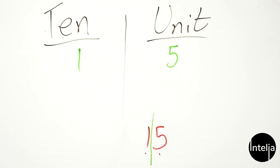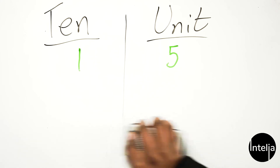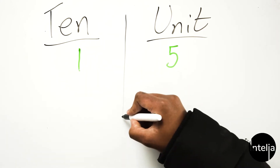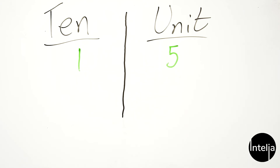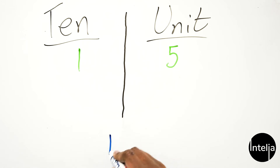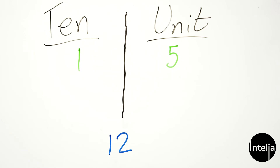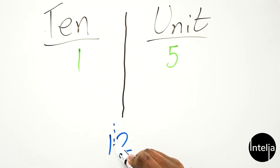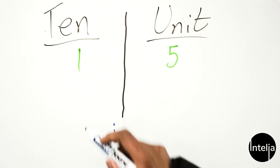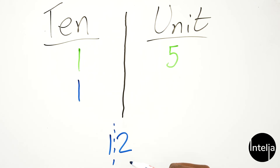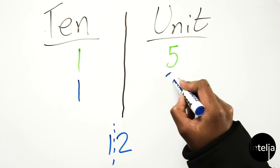Let's try another example. How about 12? So again, 12 is a ten, but how many tens are in 12? You just have to break them apart and take the first number and put it under the tens column. So there's one ten in 12. And how many units are in 12? That's the second number — two. So there are two units in 12.